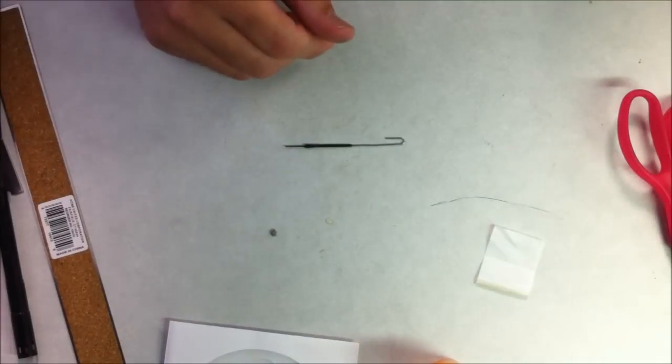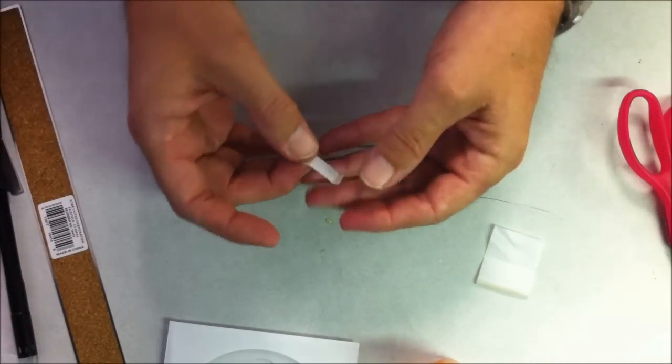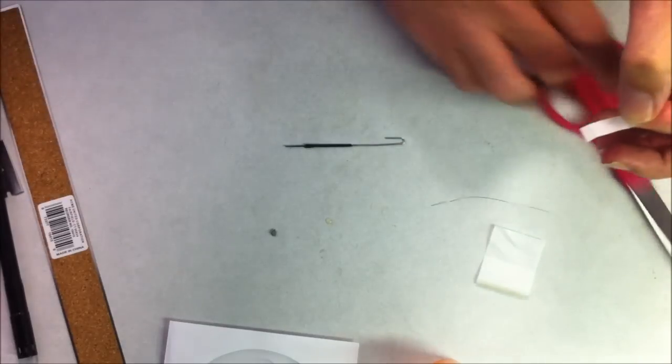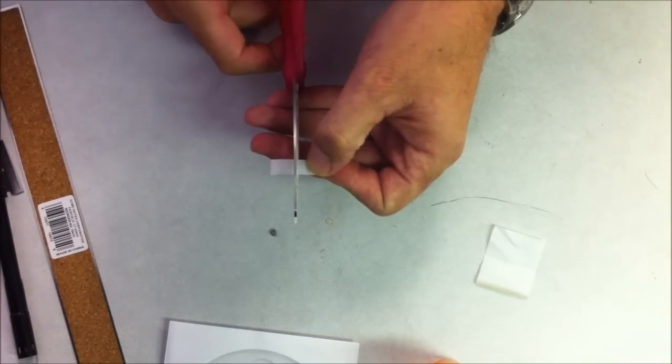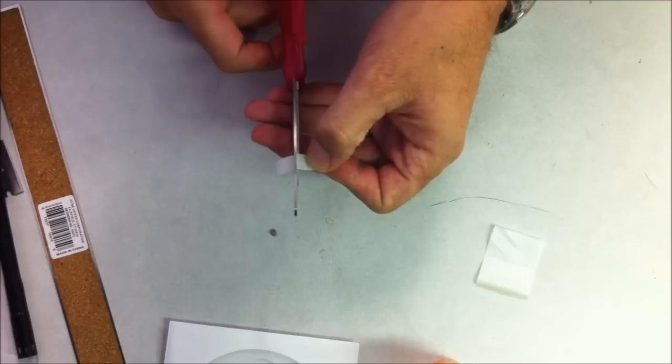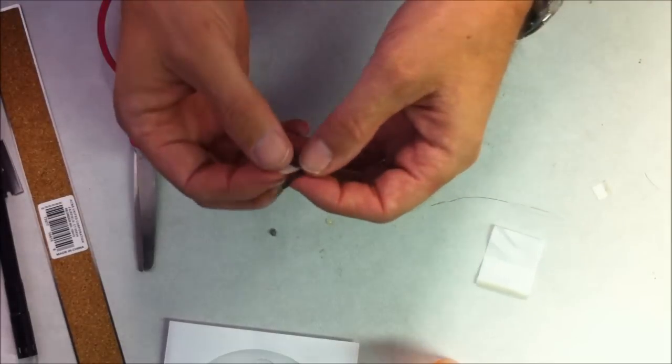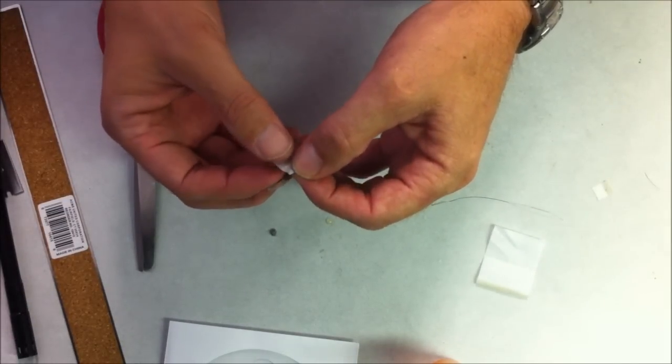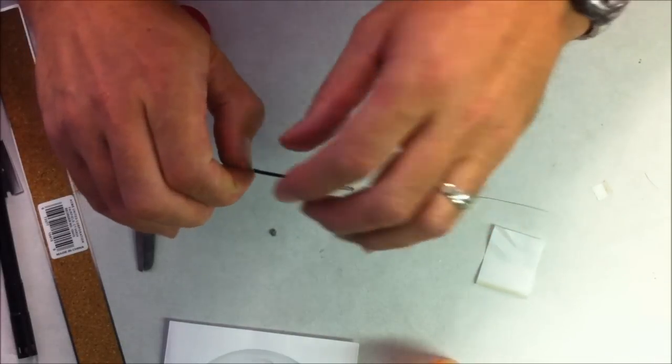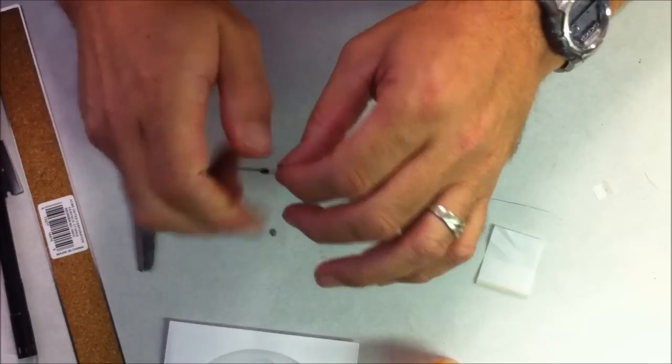Now we're going to cut a little strip of paper. This is really thin paper too, so I'm going to go about a quarter inch wide and about a half an inch, three eighths of an inch long, somewhere in there. Now what we're going to do is wrap this around, just like that.